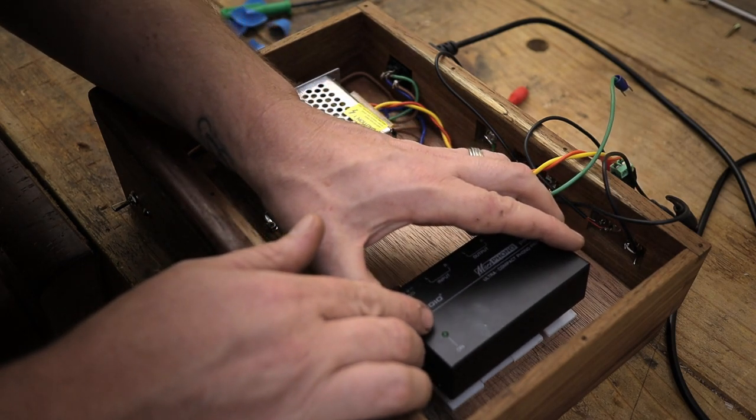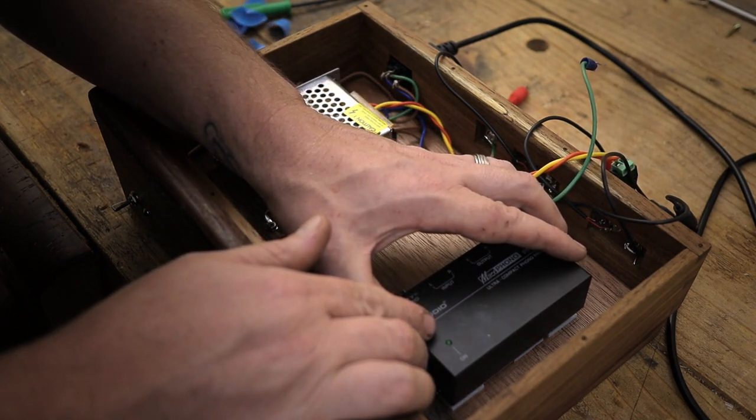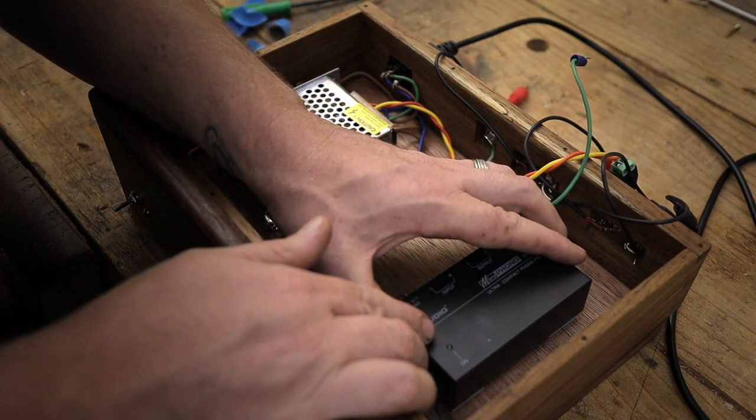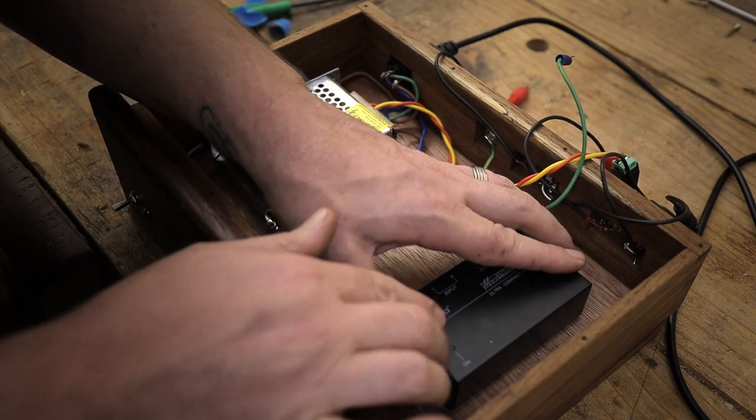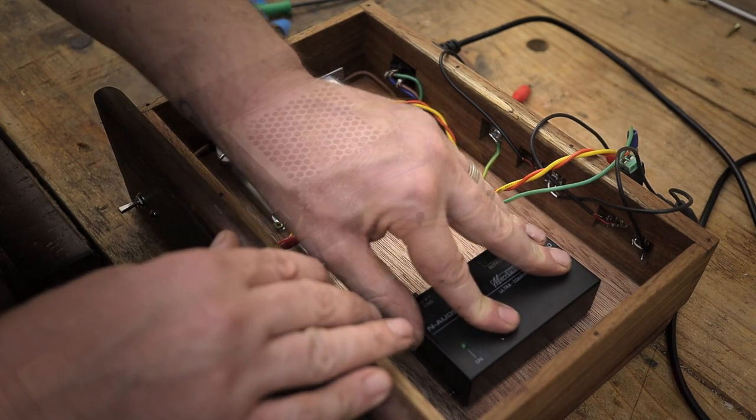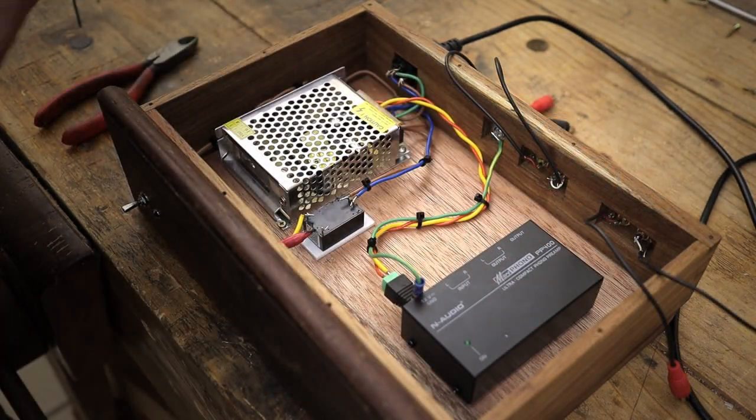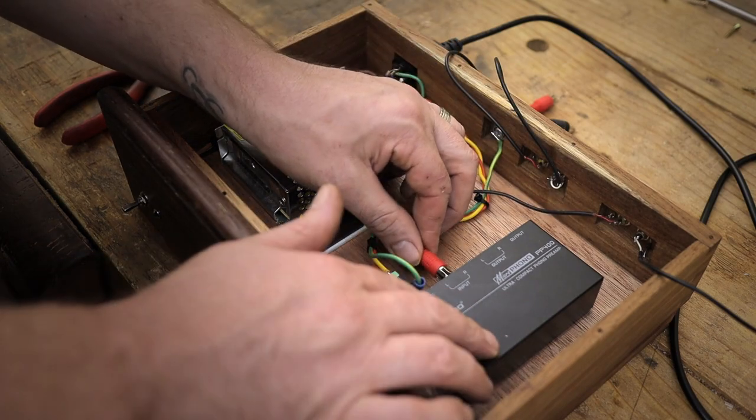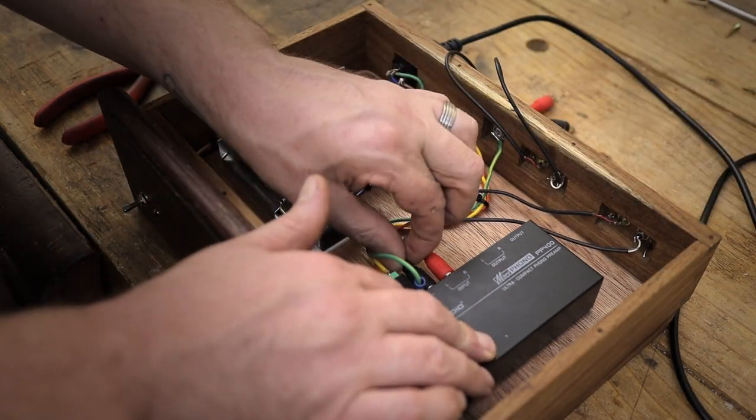With all the front and back components added it's now time to add all the components that will go inside the box. As you can see there I have the power supply already installed bolted down and now it's just basically to install the phono preamp. After that it's basically a simple case of hooking up all the wires that needs to go to each one.